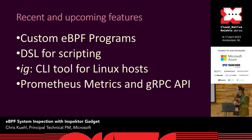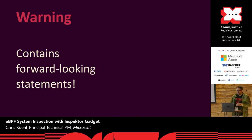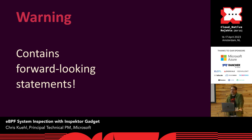We have four new features: custom eBPF programs (BYOB), a domain-specific language which we've introduced, IG — the CLI tool for Linux hosts without Kubernetes — and Prometheus metrics and gRPC API. Warning: not everything is stable — everything I'm talking about is being actively worked on, even things that landed are in an early stage, or they're in a development branch and will be in main soon.